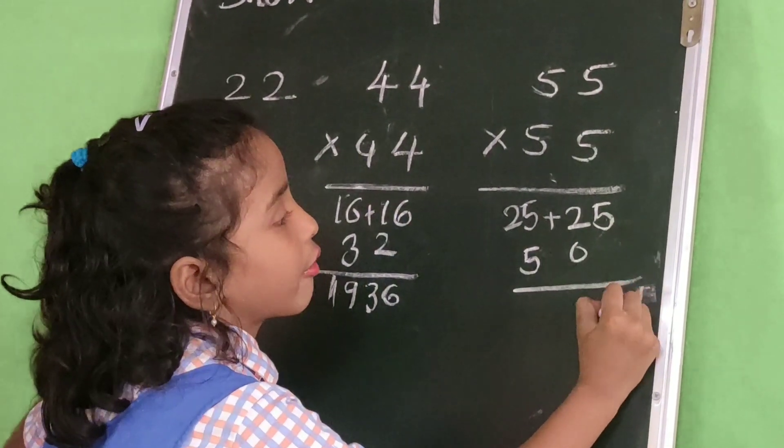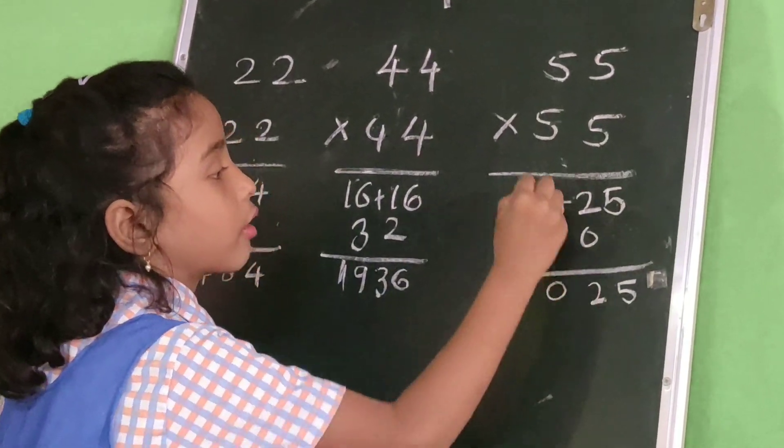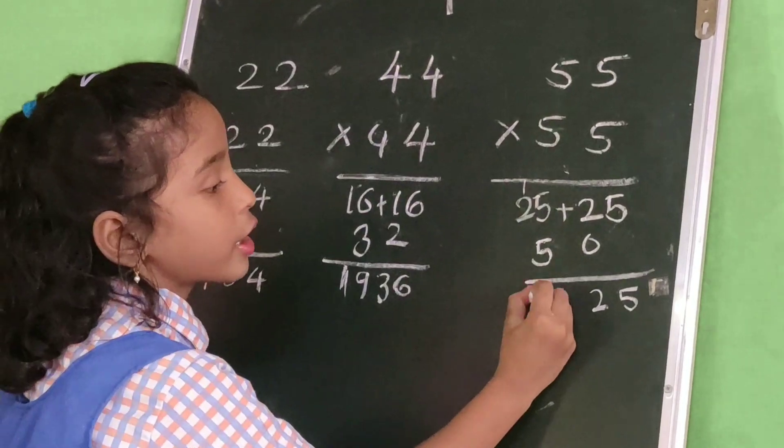5 as this, 5. 2 plus 0 equals 2. 5 plus 5 equals 10. 1 carry. 2 plus 1 equals 3.